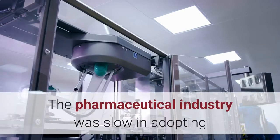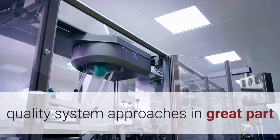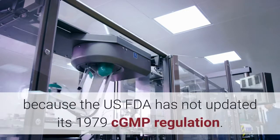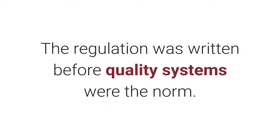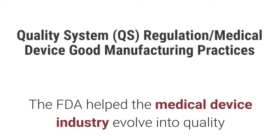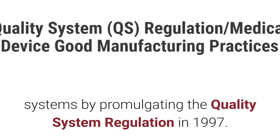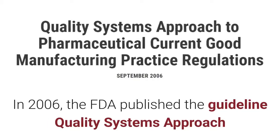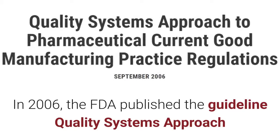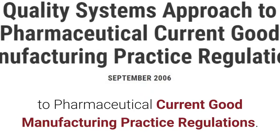The pharmaceutical industry was slow in adopting quality system approaches, in great part because the U.S. FDA has not updated its 1979 CGMP regulation. The regulation was written before quality systems were the norm. The FDA helped the medical device industry evolve into quality systems by promulgating the Quality System Regulation in 1997. In 2006, the FDA published the guideline Quality Systems Approach to Pharmaceutical Current Good Manufacturing Practice Regulations.